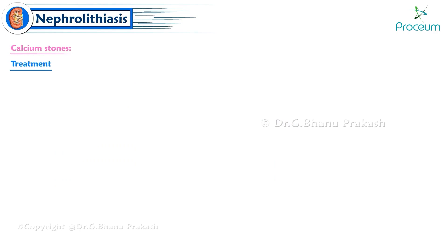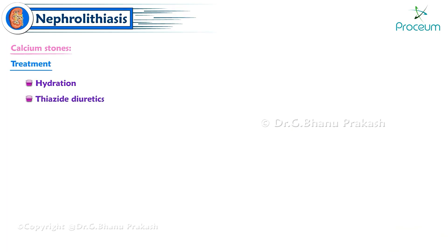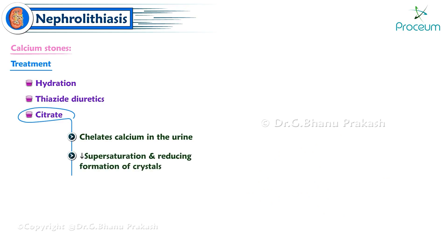Calcium oxalate crystals are seen in conditions such as hypercalcemia, increased oxalic acid, and ethylene glycol poisoning. Calcium stones are radiopaque on X-ray. Treatment includes hydration, thiazide diuretics, and citrate — citrate chelates calcium in the urine, thereby decreasing supersaturation and reducing crystal formation.